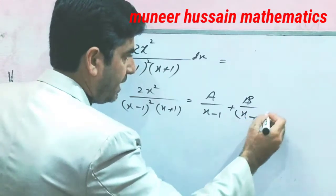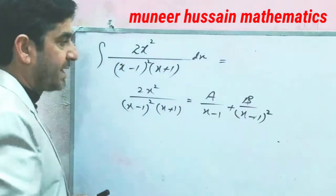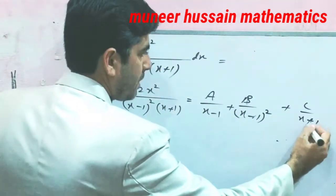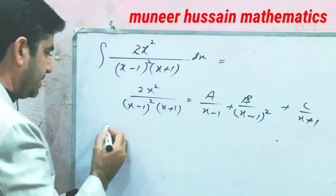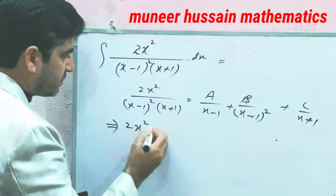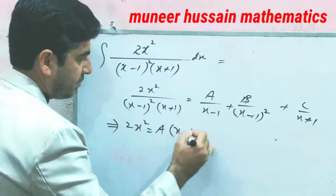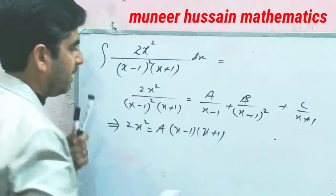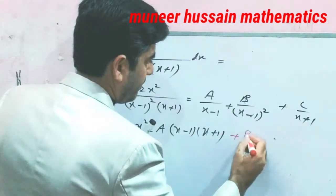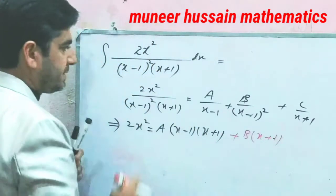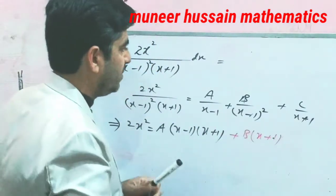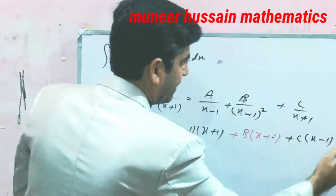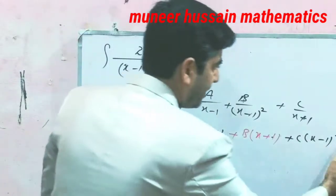If it were a cube, then we would also take c over (x minus 1) cubed, and at the end c over (x plus 1). Now, just make it an identity: 2x squared equals a into (x minus 1)(x plus 1), after that b into (x plus 1), and in the end c into (x minus 1) whole squared. That is called equation number (a).